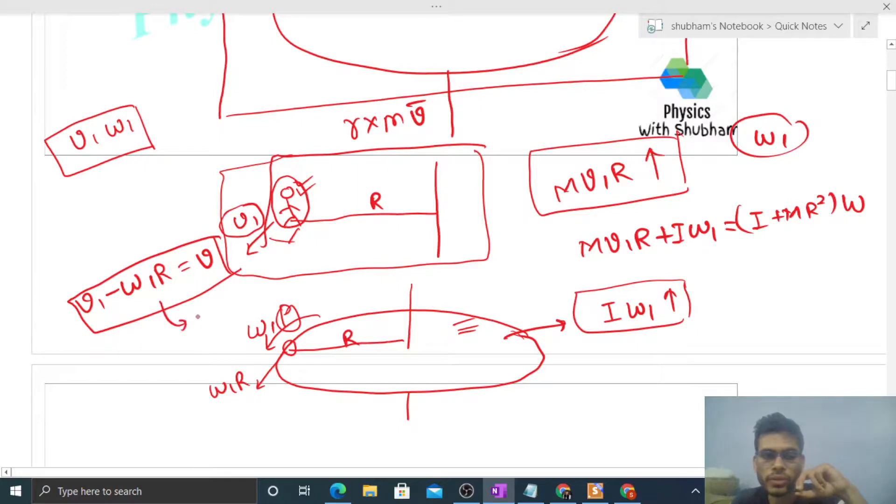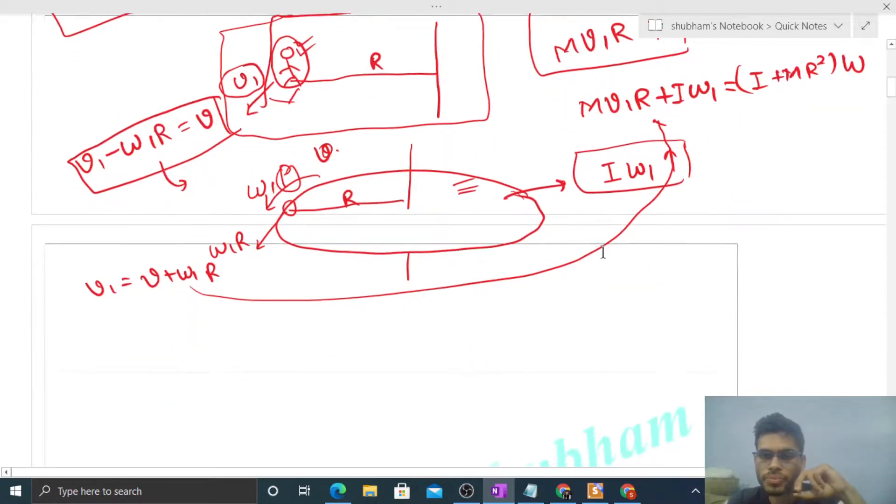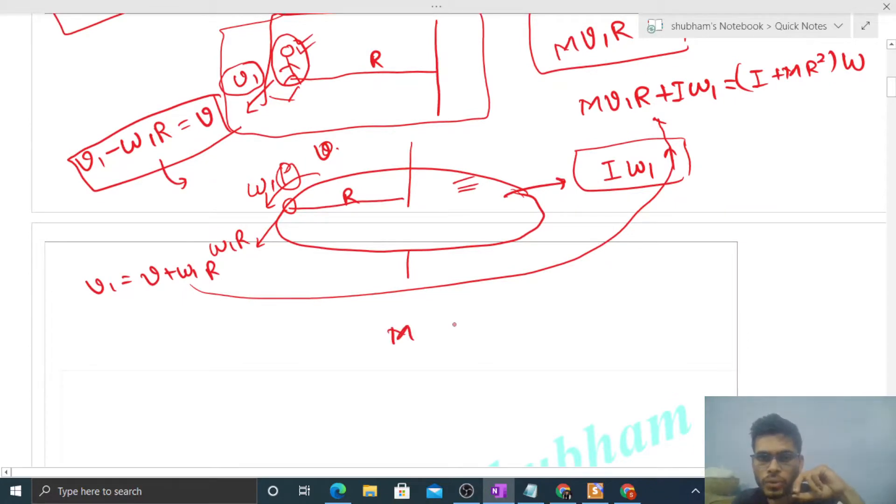We need to find the value of omega 1. Let's find the value of v1 from the first equation. v1 will be simply v plus omega 1 into R. Put this v1 value into the angular momentum equation: M into R into (v plus omega 1 into R) plus I into omega 1 equals I plus MR square into omega.